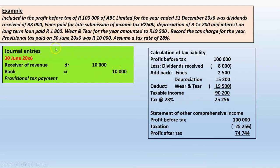At year end, we must determine taxable income because tax is calculated not on accounting profit before tax, but on taxable income. This is purely a calculation — nowhere in our books do we record the in-between steps. The purpose is to work out the total tax liability for the year, which we will then post in our books.